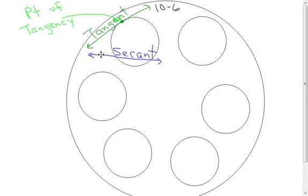A line that's going to essentially go through the circle and touch the circle at two points is referred to as a secant. Remember the difference: a tangent line touches the circle one time, a secant line touches the circle two times.